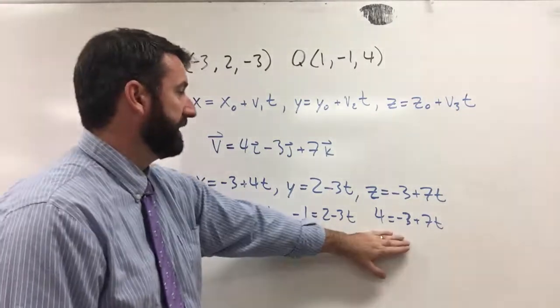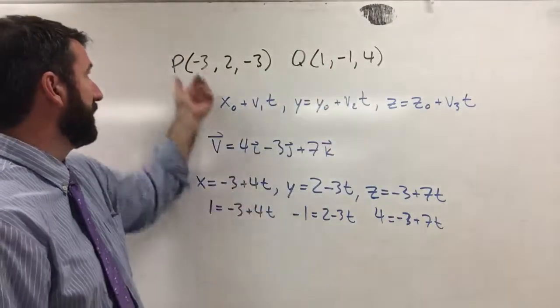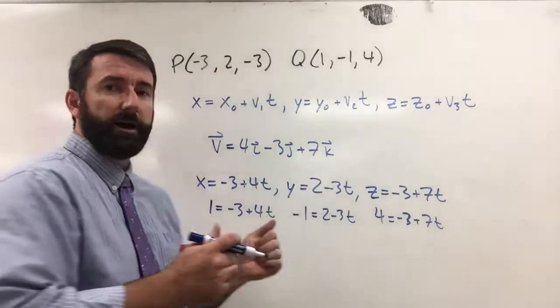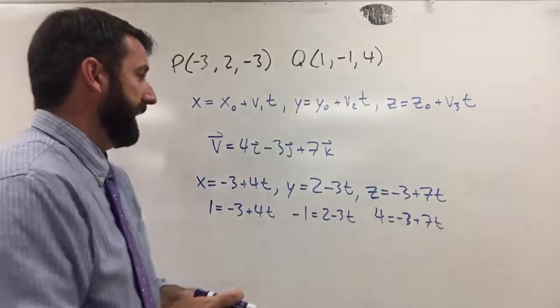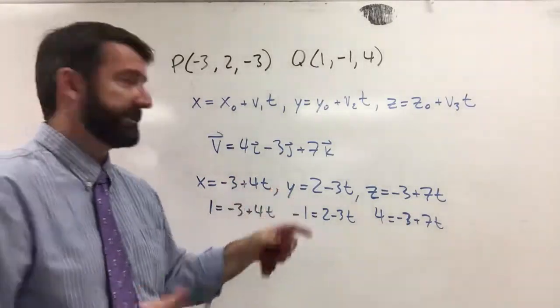So if t is 1, we're going to get Q. We're going to get this point Q. If t is 0, we're going to get the point P. So we want t to be between 0 and 1.